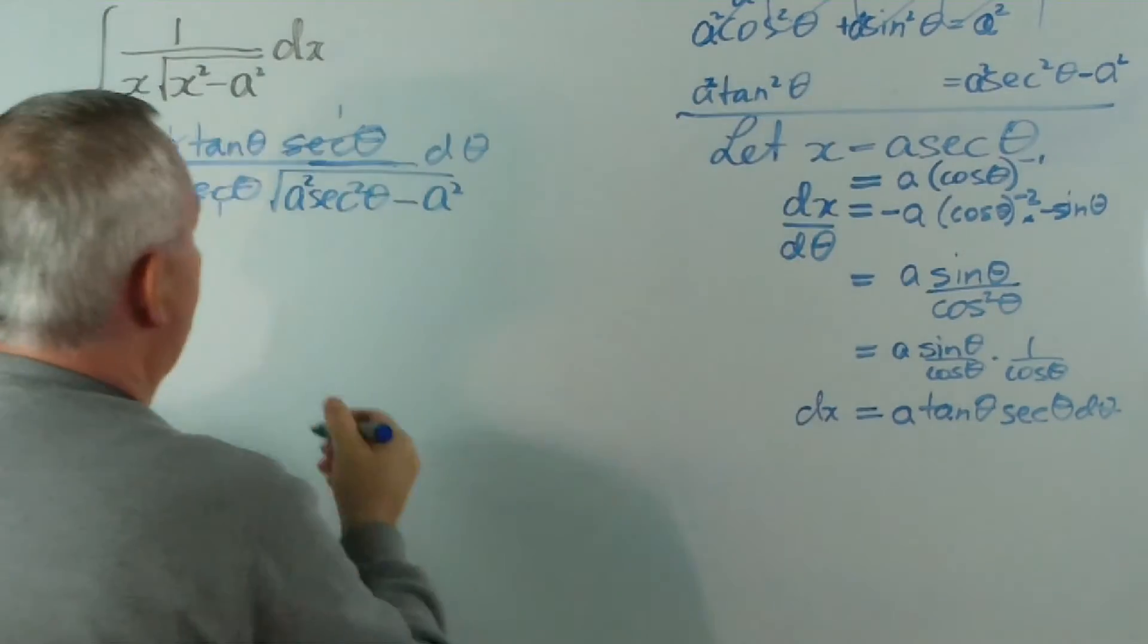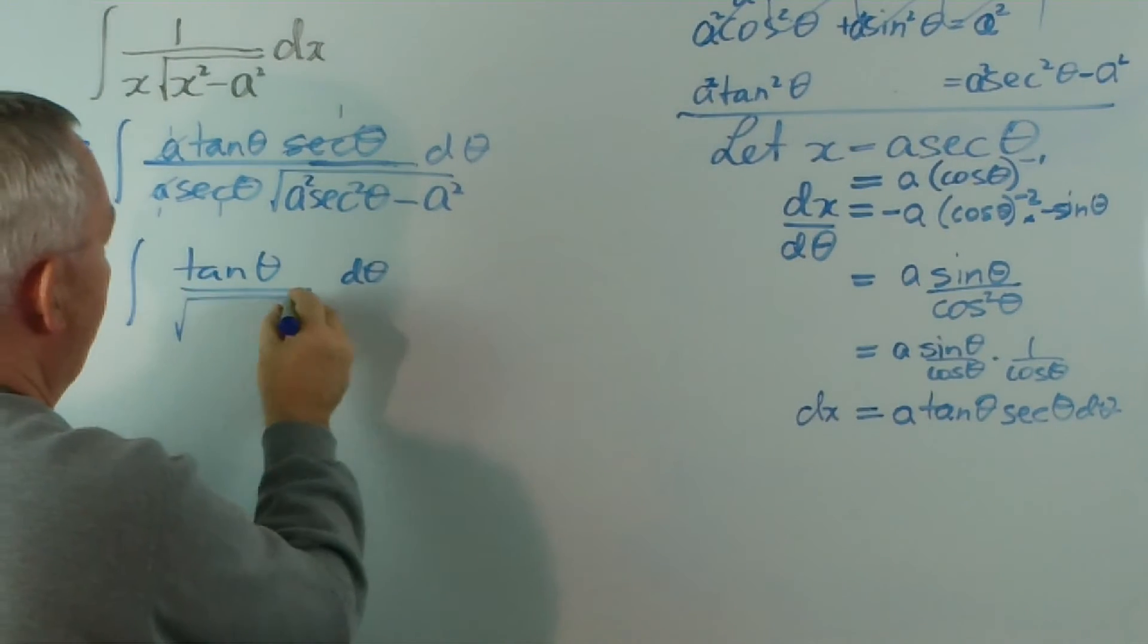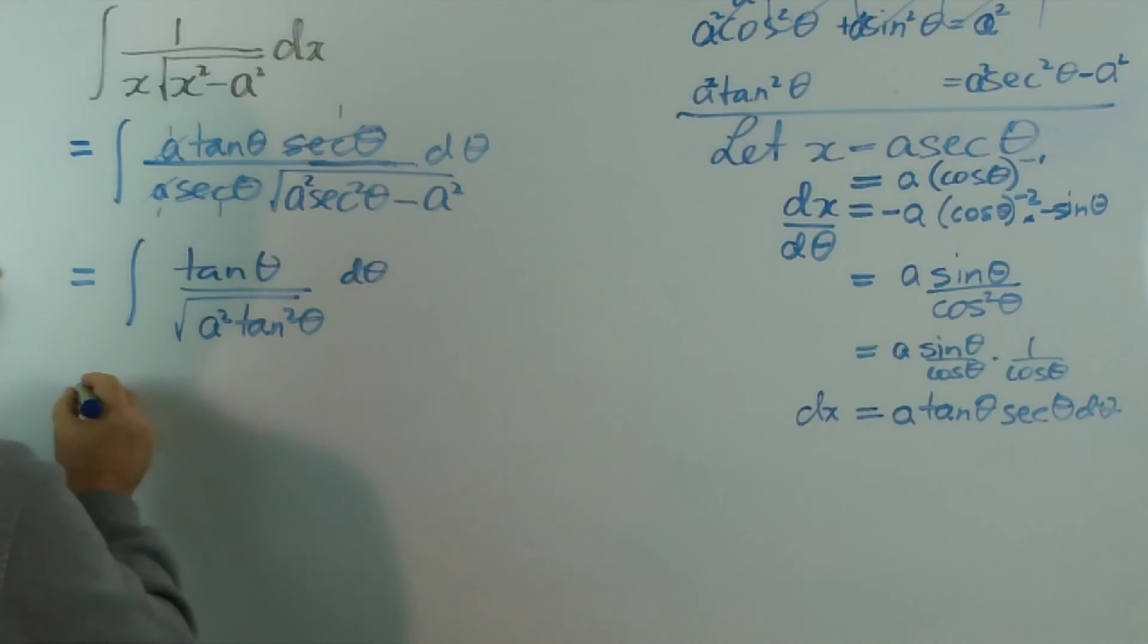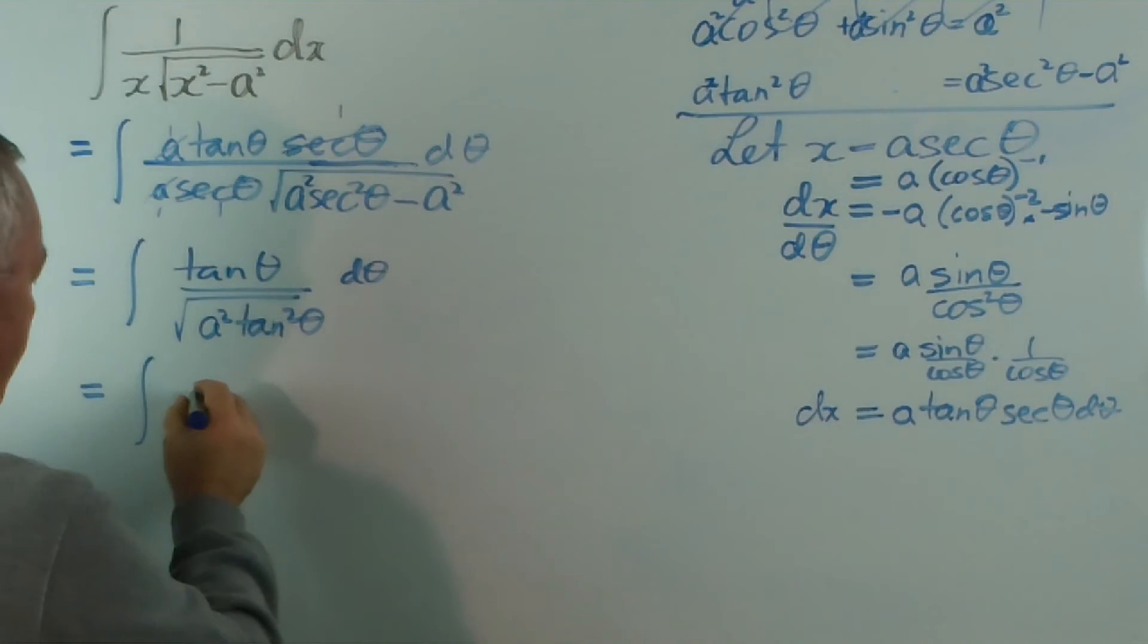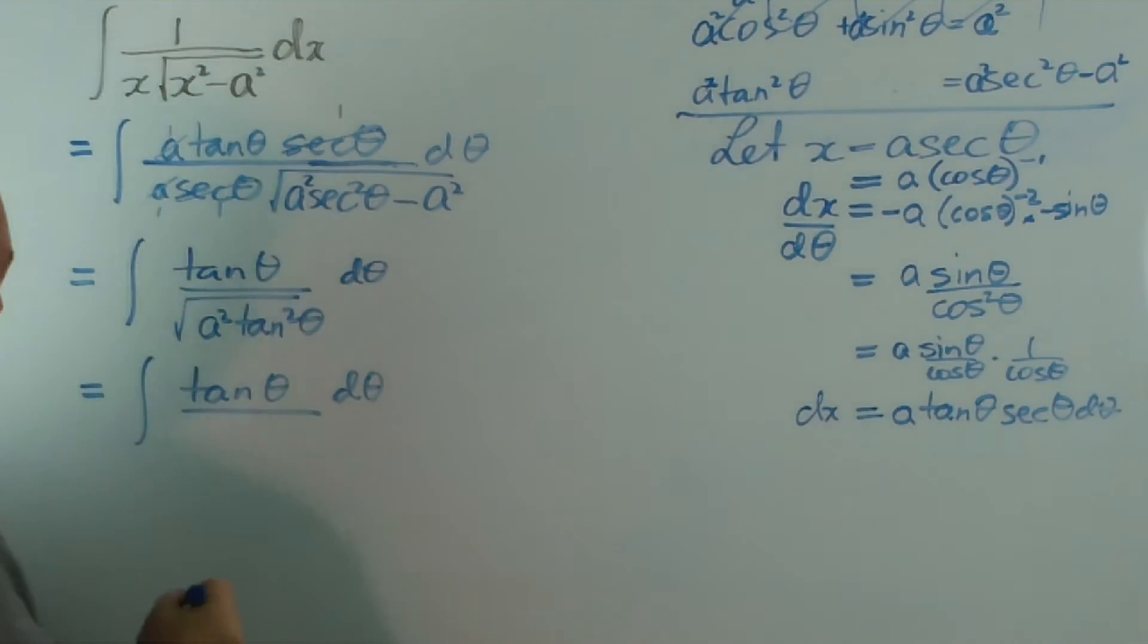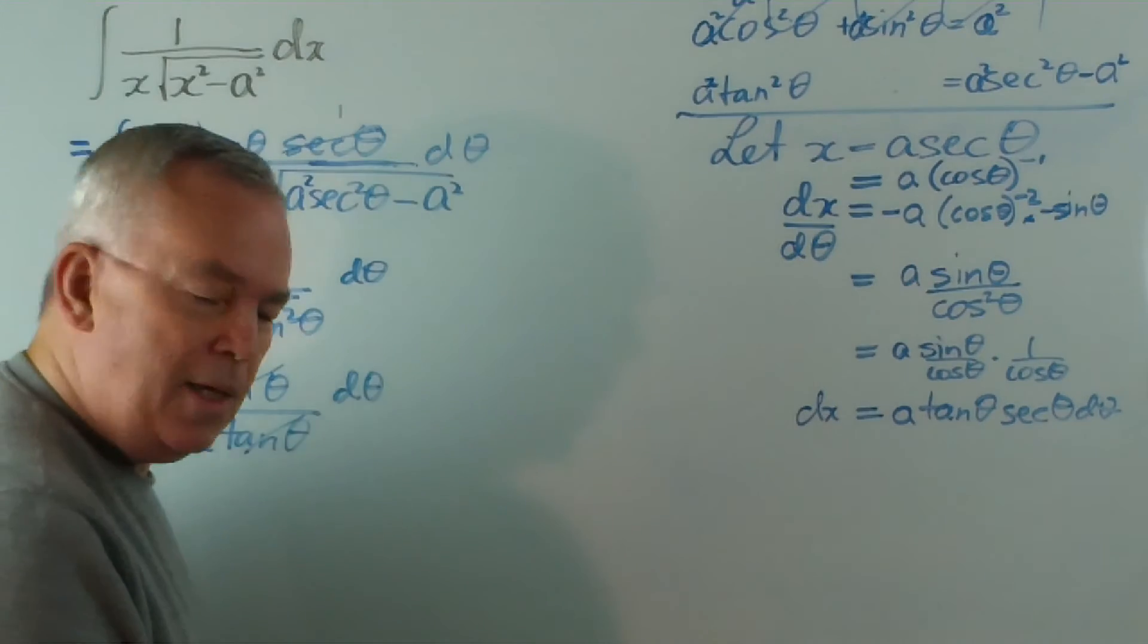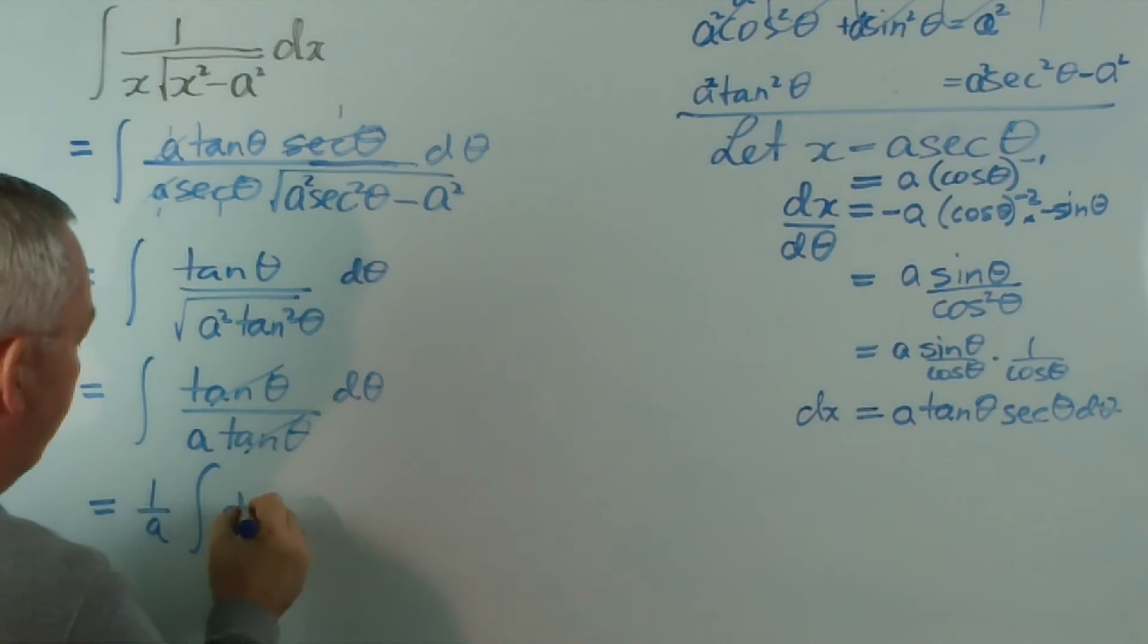Also, a squared sec squared theta minus a squared is this. In fact, this is where it all came from. We were trying specifically to sort this out. There it is, so we can replace it with that. So on the top I'm going to have tan theta d theta, and on the bottom I'm going to have the root of this, which is a squared tan squared theta. The square root of a squared tan squared theta is a tan theta. And the tan theta has disappeared.